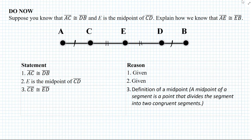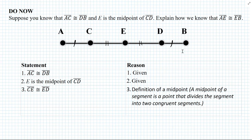So we have to be very careful how we use definitions. Now if you look at segment AC and CE, and segment DB and ED, they're congruent respectively. So how do we know that segment AE is congruent to segment EB?